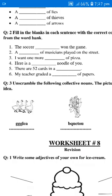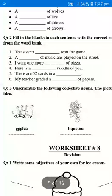So you can fill in the blanks with the correct collective noun. Number 1: The soccer dash won the game. Number 2: A dash of musicians played on the street. Number 3: I want one more dash of pizza. Number 4: Here is a dash of noodles for you. Number 5: There are 52 cards in a dash. Number 6: My teacher graded a dash of papers.